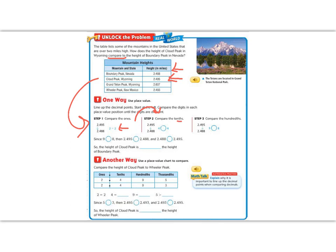4 is equal to 4, so we can't compare them in that place value either. So we go to our next place value, the hundredths. In the hundredths, one number has a 9 and one number has an 8. 9 is greater than 8. Since 9 is greater than 8, we know that the whole number 2.495 is greater than 2.488.